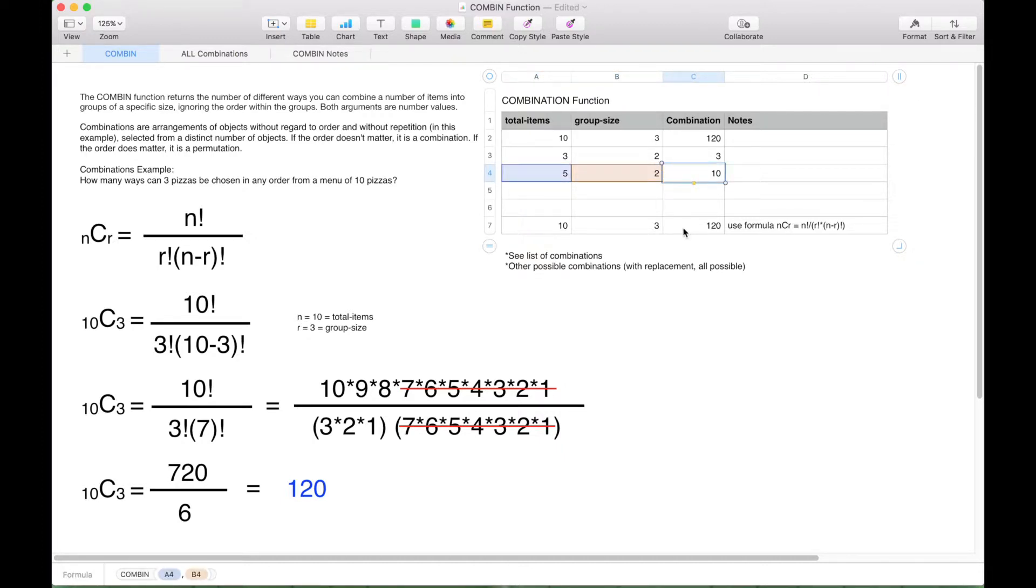Now just to show you, you could use this formula here with the factorial function to calculate the answer. And this example mimics our example with the pizzas. But as you can see, this formula is a little bit more complicated, so you might as well just go ahead and use the combination function.